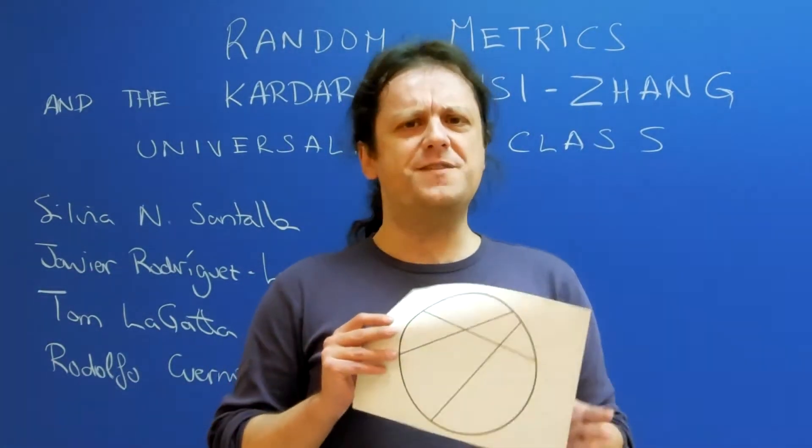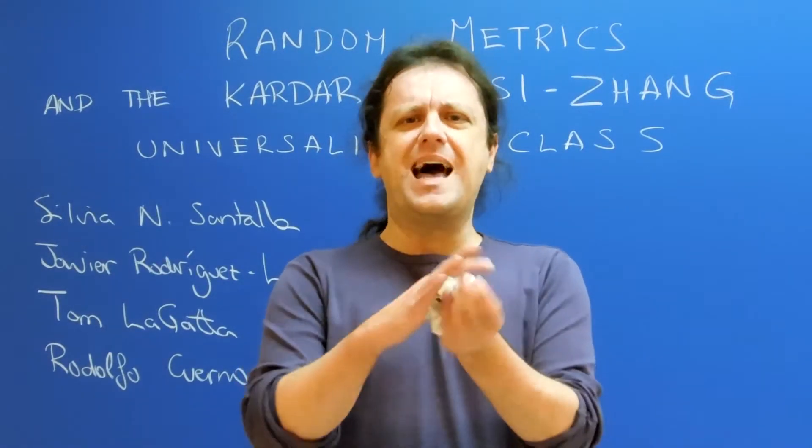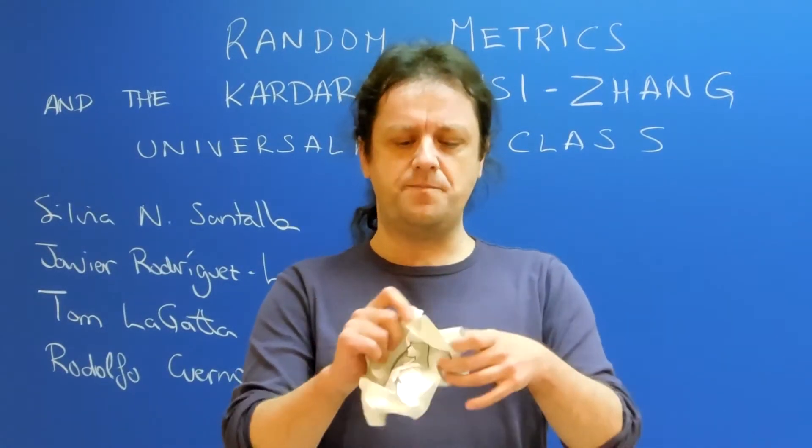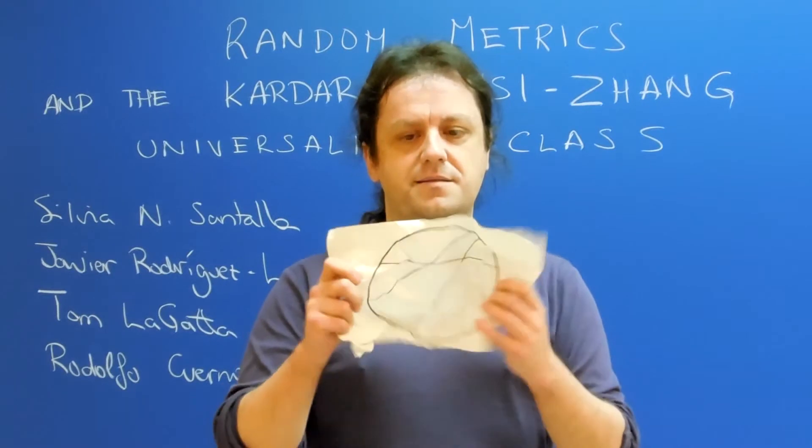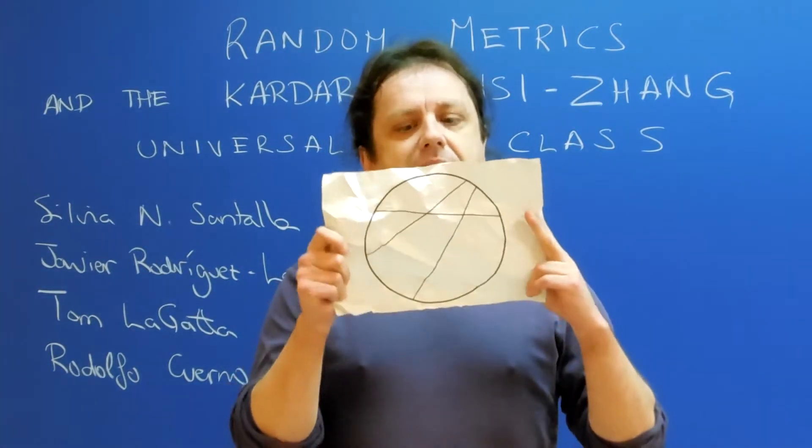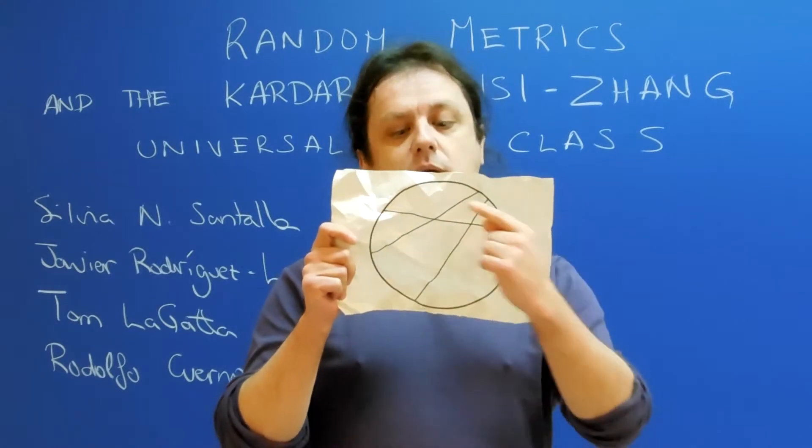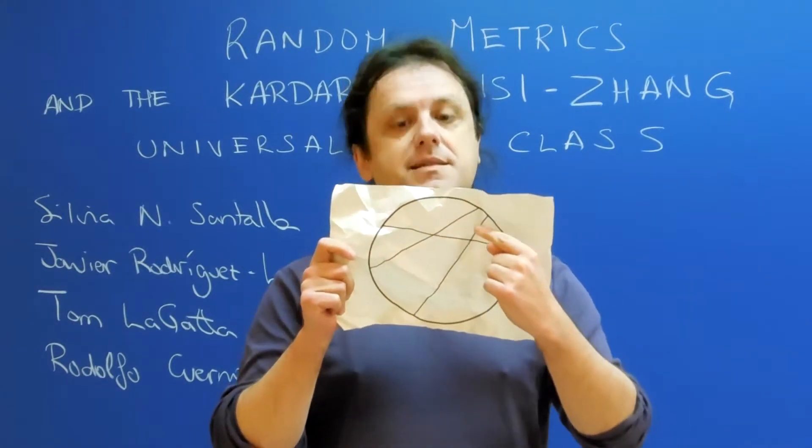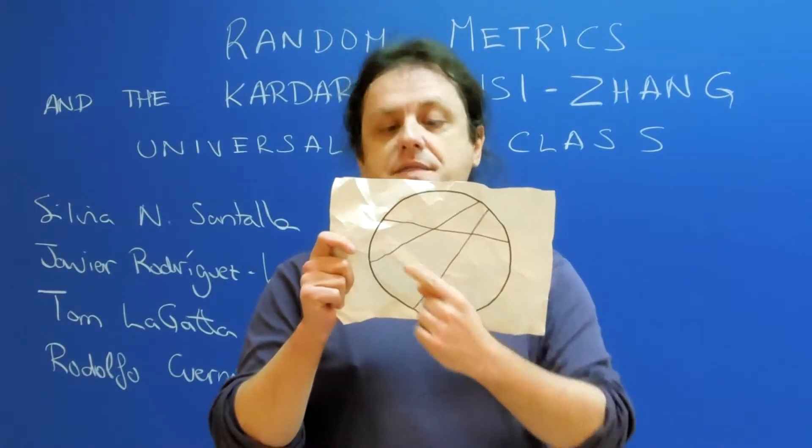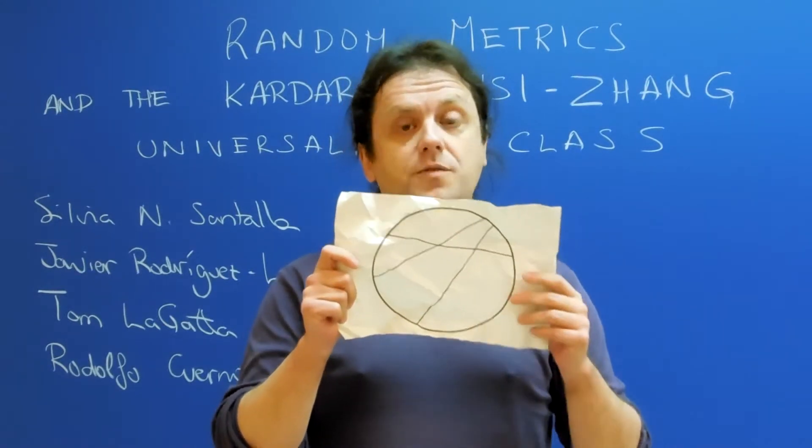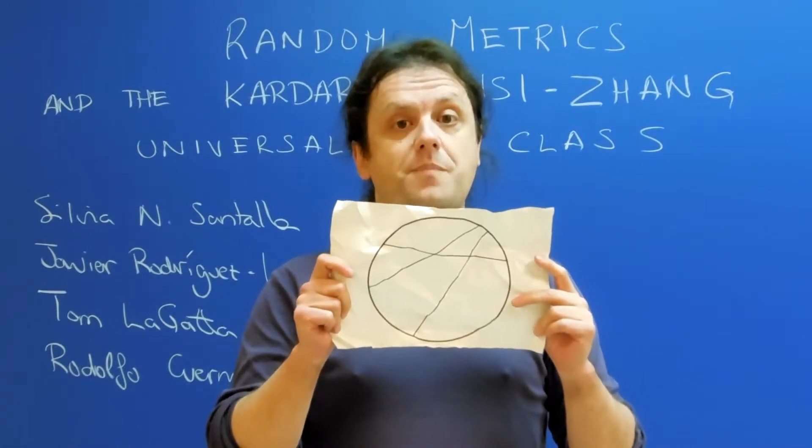But what will happen if space itself becomes irregular? Then the circles and the lines themselves become rough. Now we will call the lines geodesics, and we will call the circles balls of this new irregular manifold.